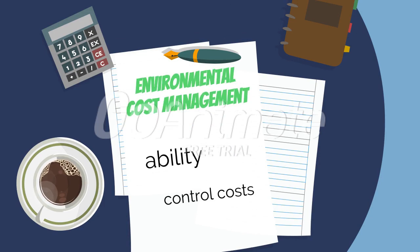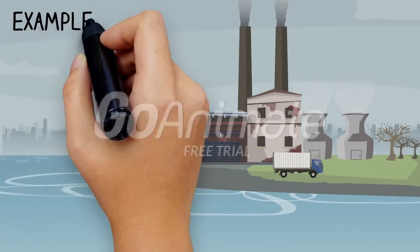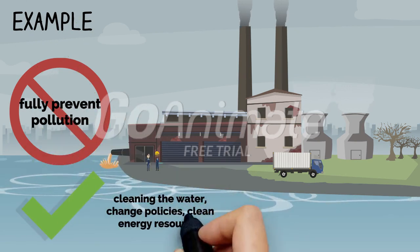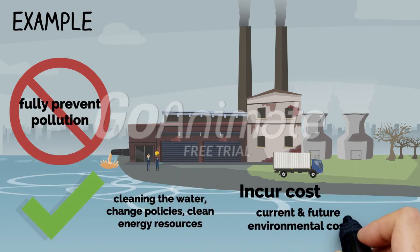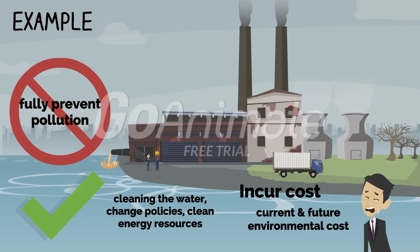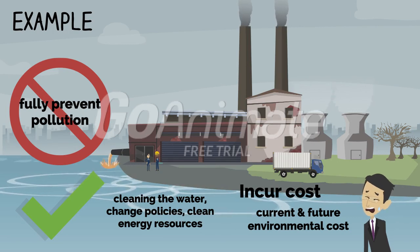Environmental cost management is all about a firm's ability to control costs which are associated with the environment. For example, a manufacturing company will not be able to fully prevent pollution in terms of air and water when they are doing their operations. Therefore, to make up for this, they need to provide some actions to correct those mistakes such as cleaning the water, changing the policies, or using clean energy resources.